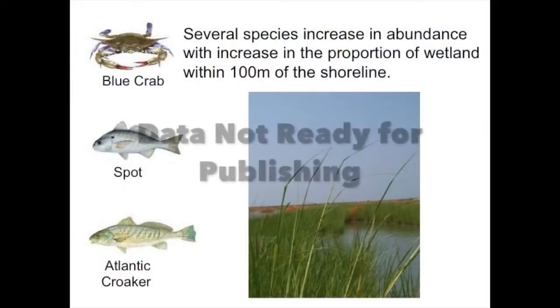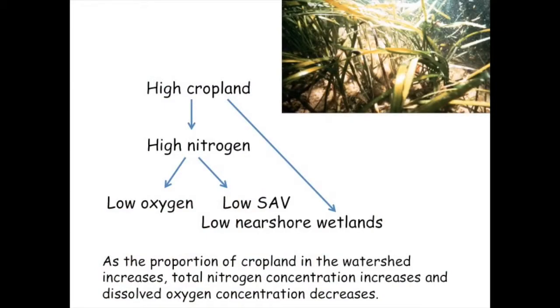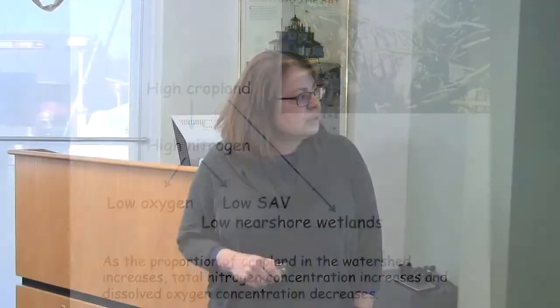This is an example showing the same three species as before. Again, the more wetland — and this is within a hundred meters of the shoreline — the more fish. What we think is going on is that high cropland essentially results in high nitrogen concentrations, which do two things. The fish aren't going to directly care about the nitrogen, but it results in lower oxygen and lower SAV, which would normally provide refuges for small and juvenile fish. The high cropland also probably displaces the near-shore wetlands.